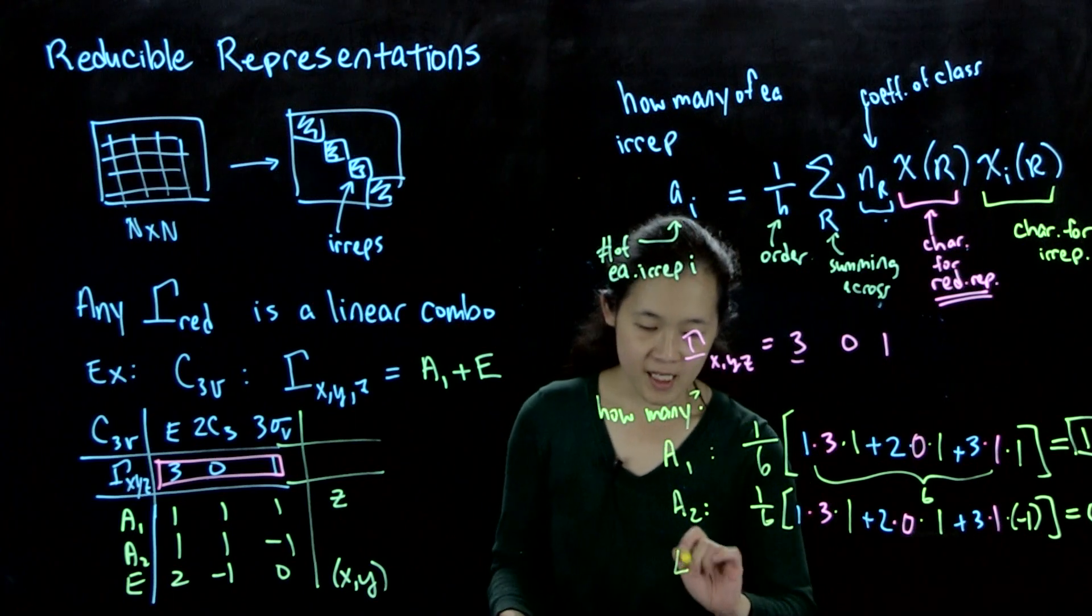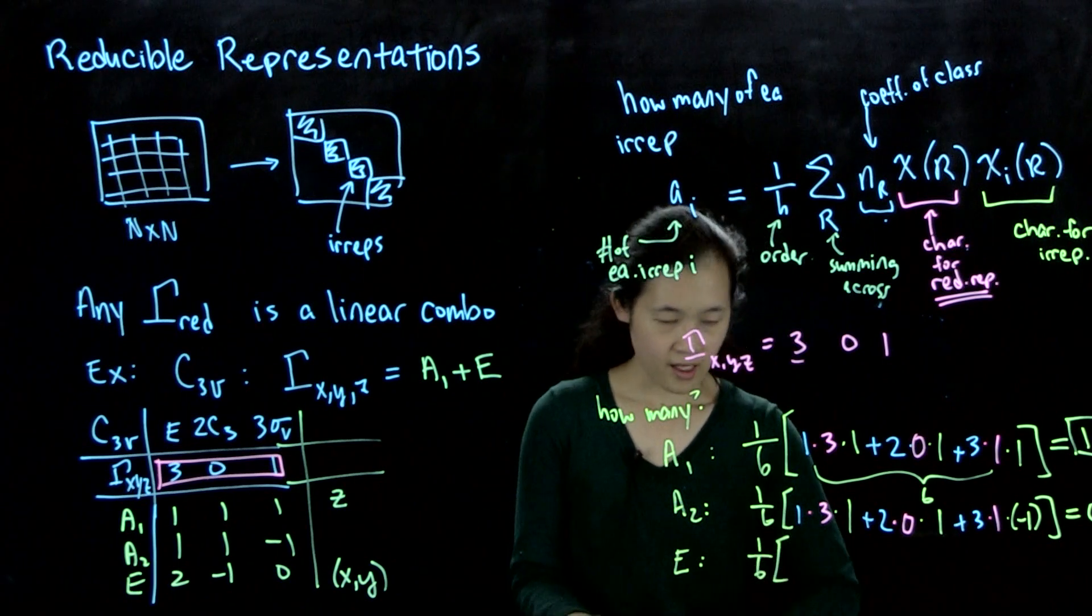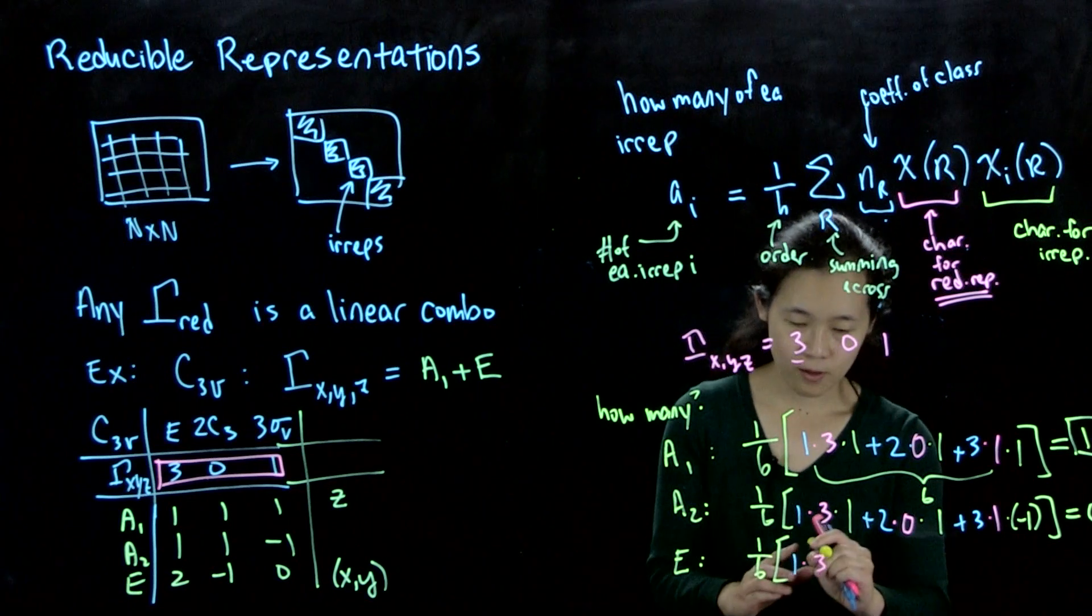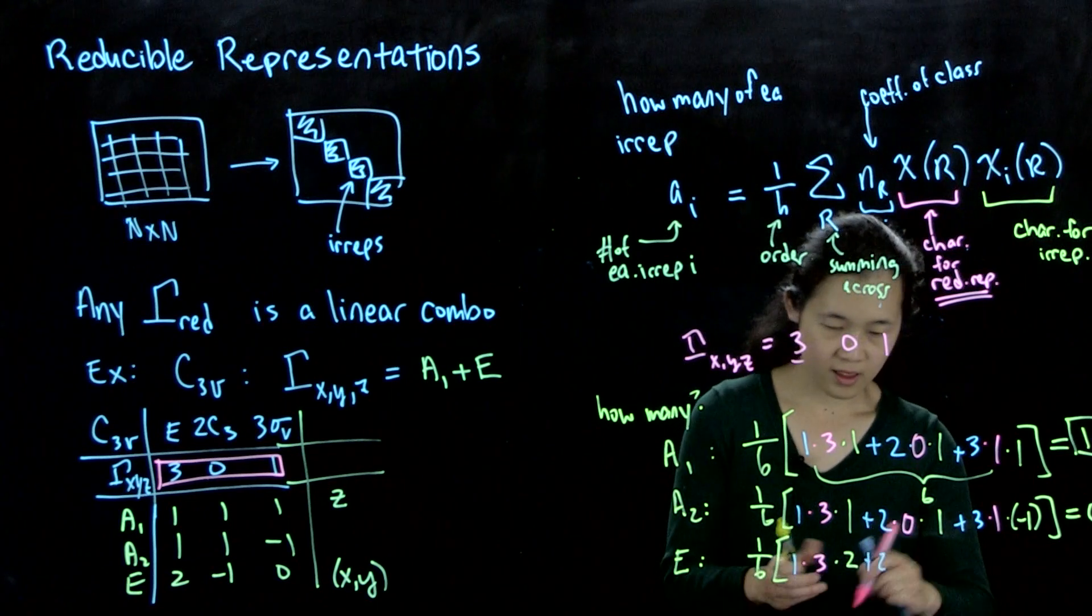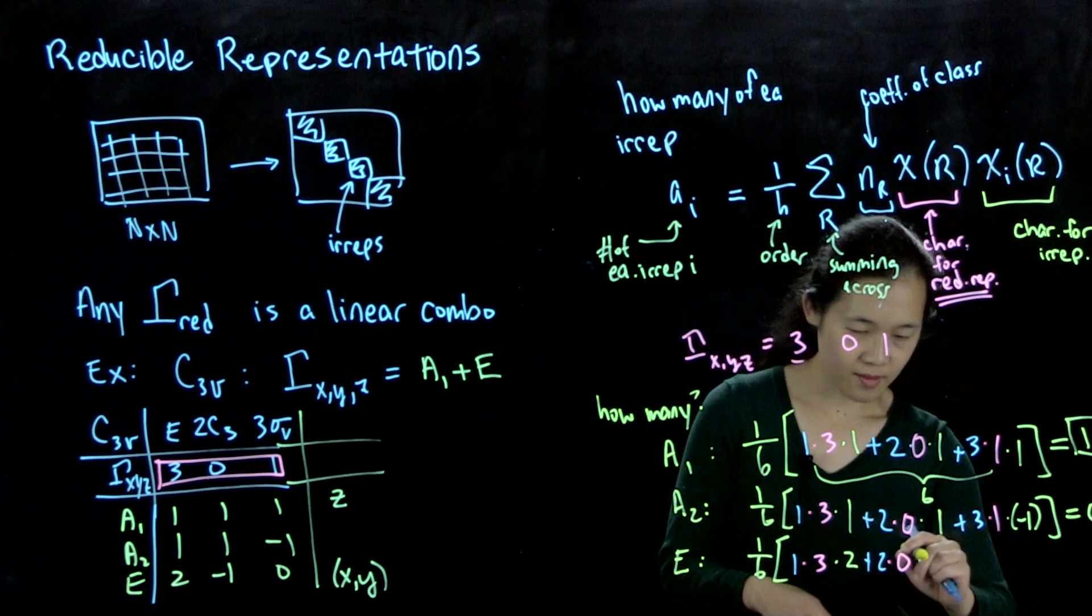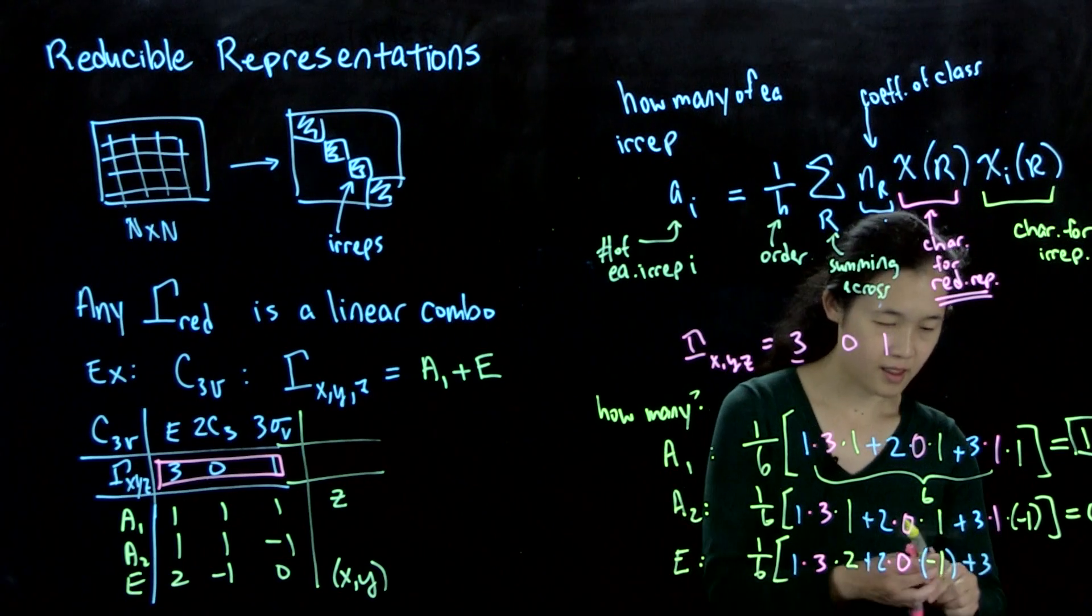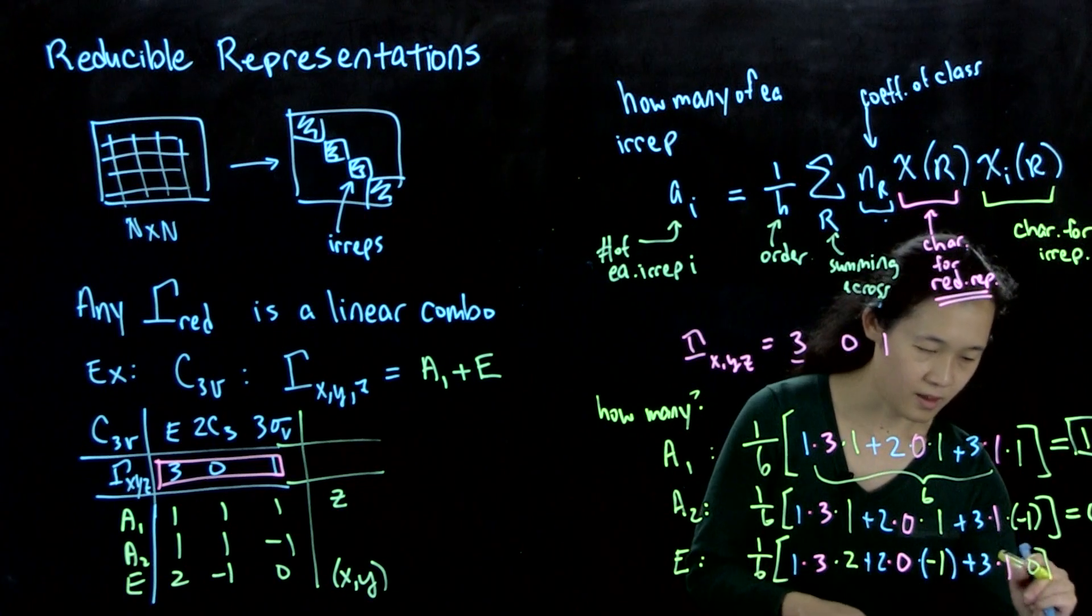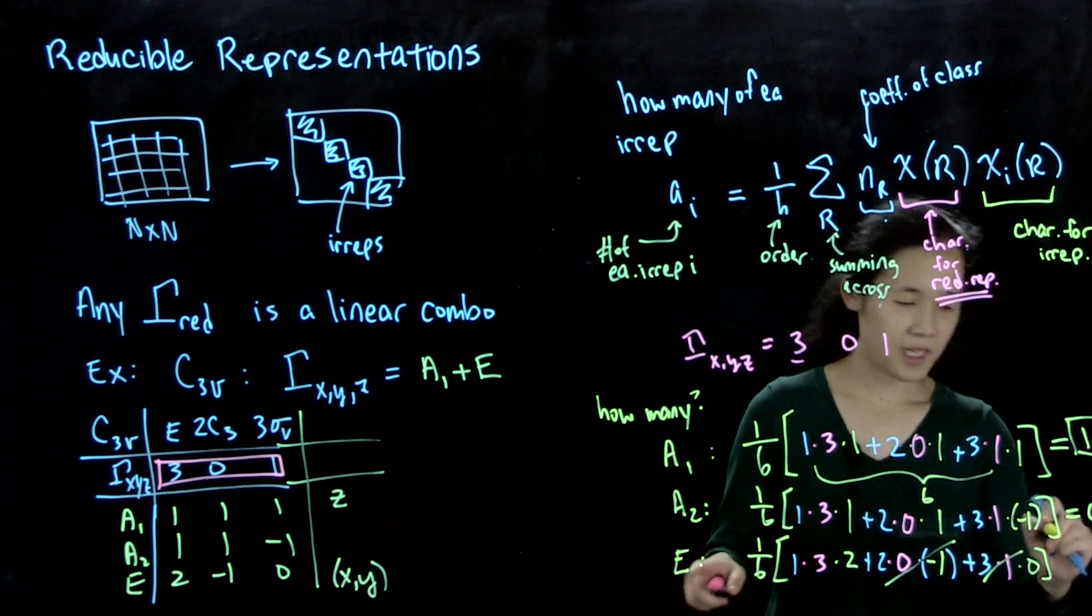Our last one is, how many e's? So we do 1 over 6. This is 1 times 3, in this case times 2, plus 2 times 0 times minus 1, plus 3 times 1 times 0. So overall, these go to 0. This is 6. This is 1 over 6, so this equals 1.